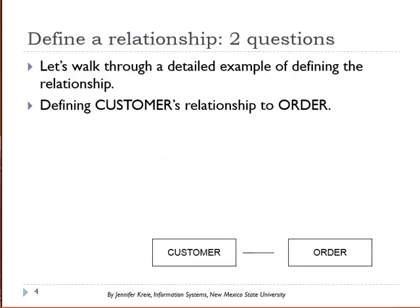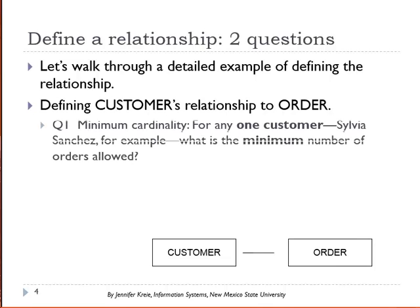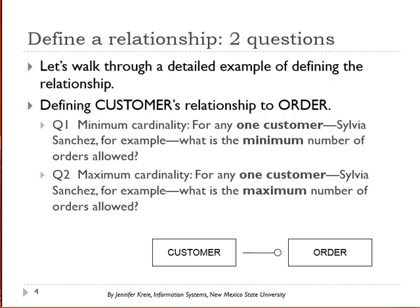Let's walk through an example — we're going to define the customer's relationship to order. For any one customer, and it's always a good idea to pick a specific example like Sylvia Sanchez, what is the minimum number of orders allowed? We have zero here, so a customer can have a minimum of zero orders. In practical terms, that means we'd have data about people in our customer table even if they haven't placed an order — they may be potential customers we want to send advertising to.